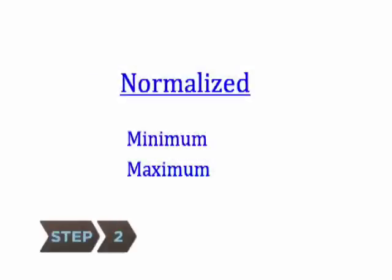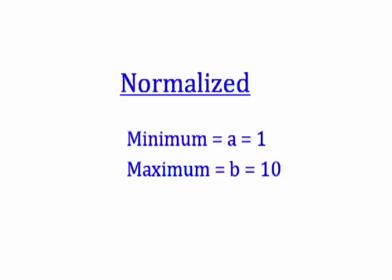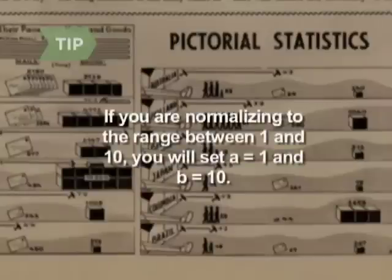Step 2. Identify the smallest and largest numbers in the normalized scale and represent them by the variables lowercase a and lowercase b, respectively. If you are normalizing to the range between 1 and 10, set a equal to 1 and b equal to 10.